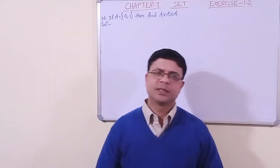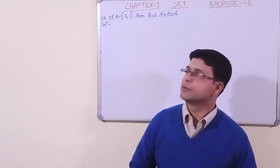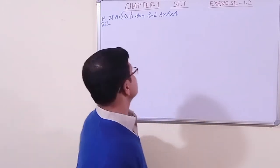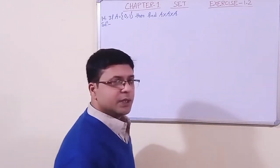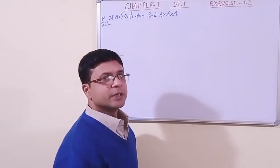My dear beloved students, we have the last question of exercise 1.2, question number 14. The question is: if set A has two elements, 0 and 1, then we have to find A cross A cross A.